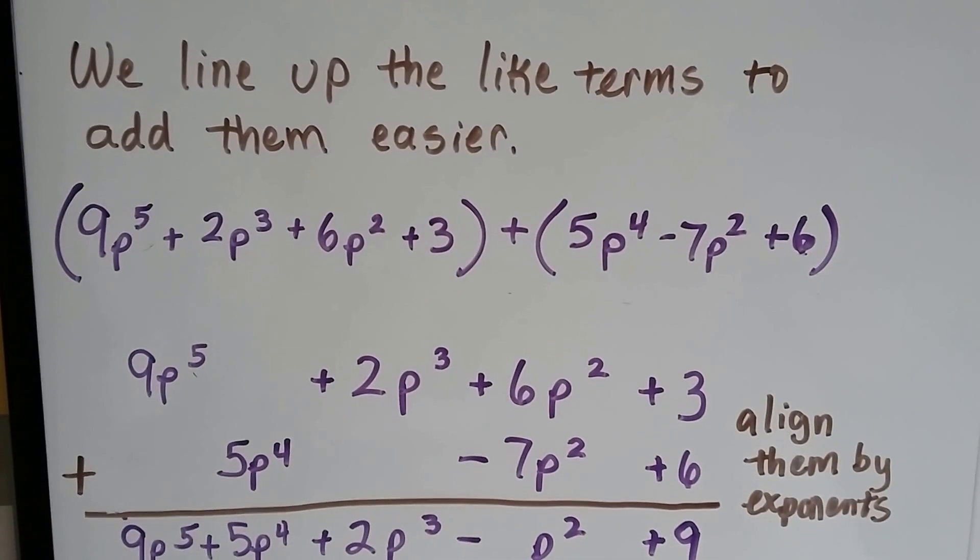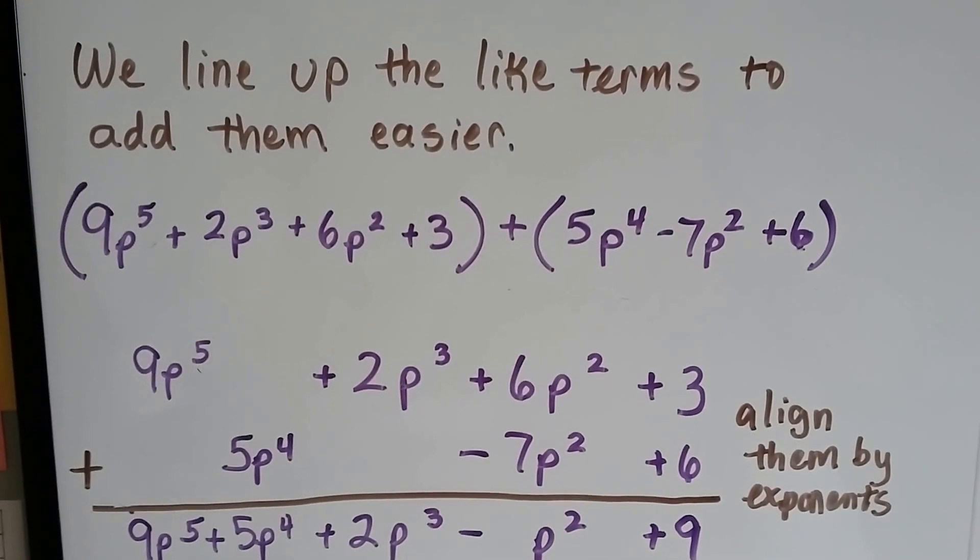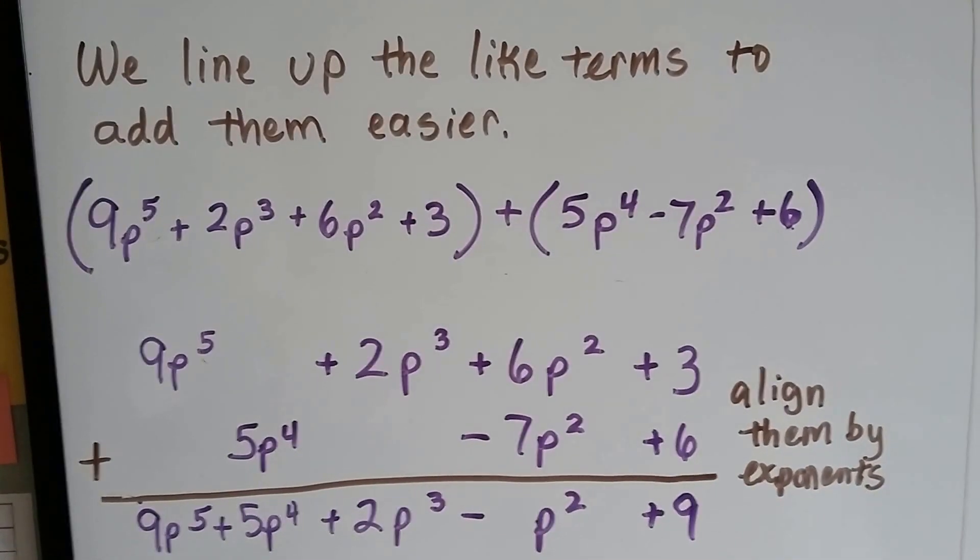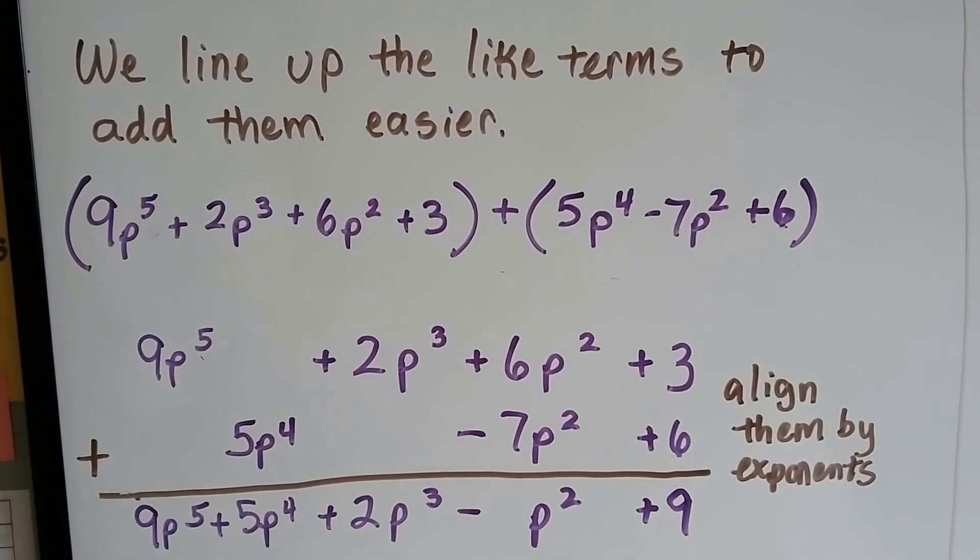So take a look at these two big polynomials right here. This one's got four terms, and this one's got three terms. And they're not identical, are they? They have different terms.